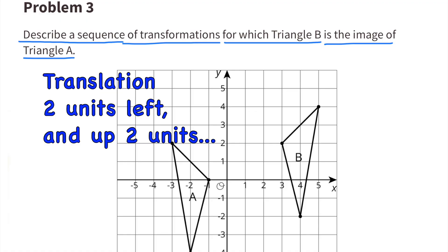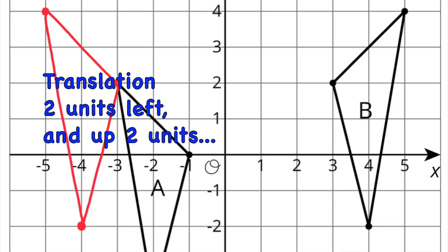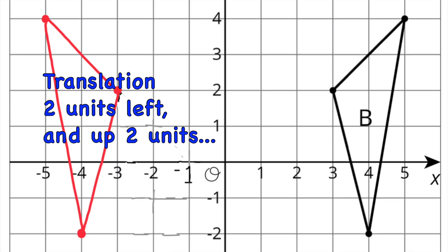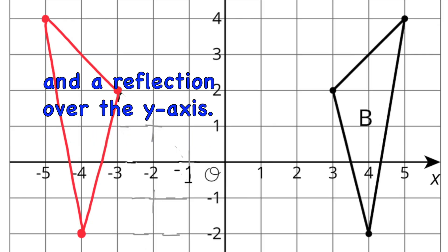The first sequence in the transformation would be a translation 2 units to the left and up 2 units. And the final transformation in the sequence is a reflection over the y-axis.